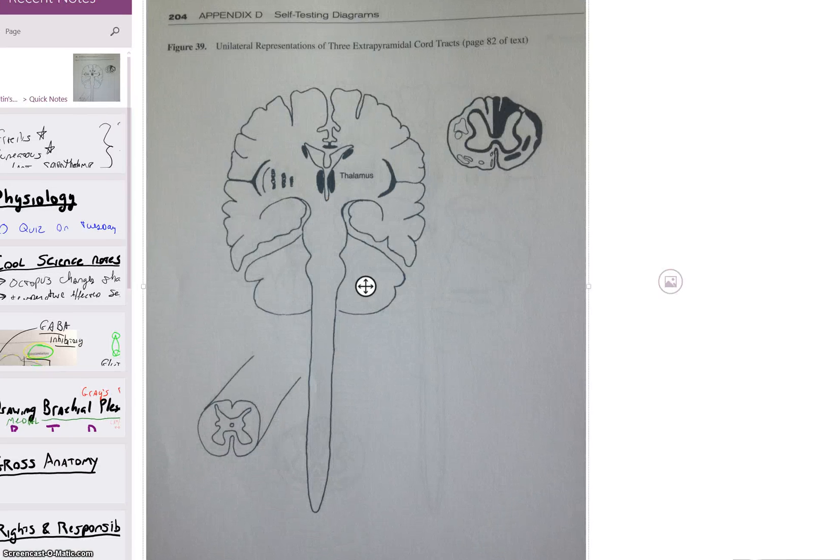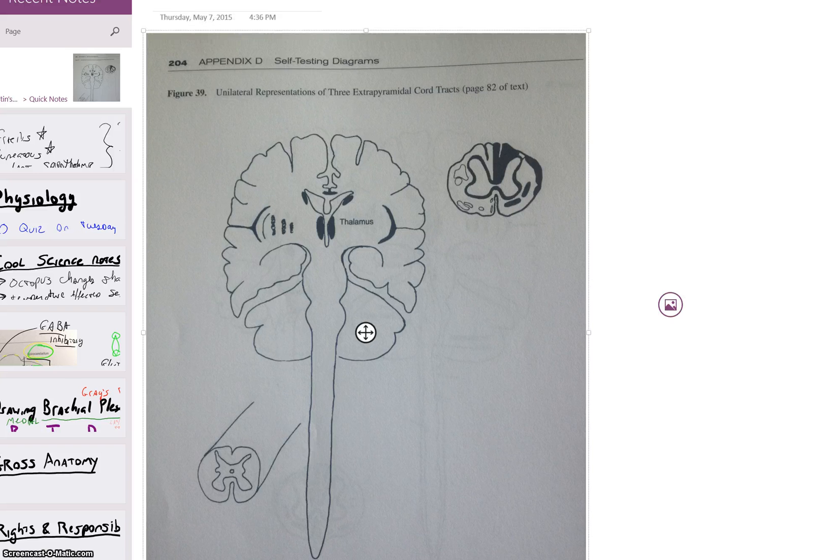Alright, we're going to go over two more ascending tracks. They're both pretty simple. They differ from the cuneatus and gracilis in a couple ways.